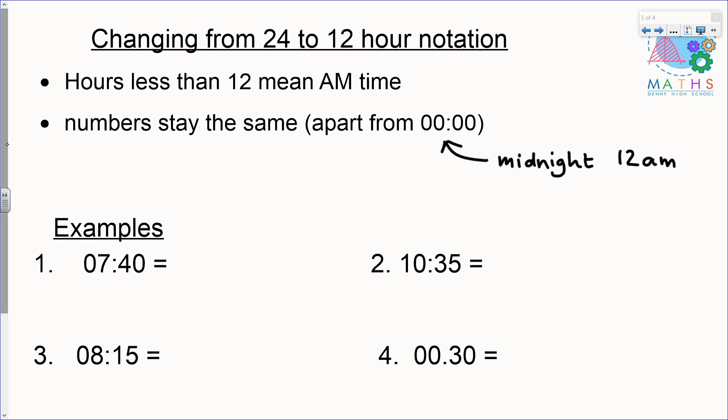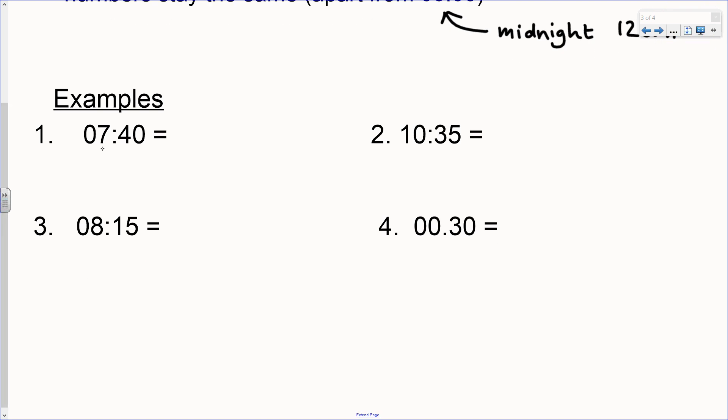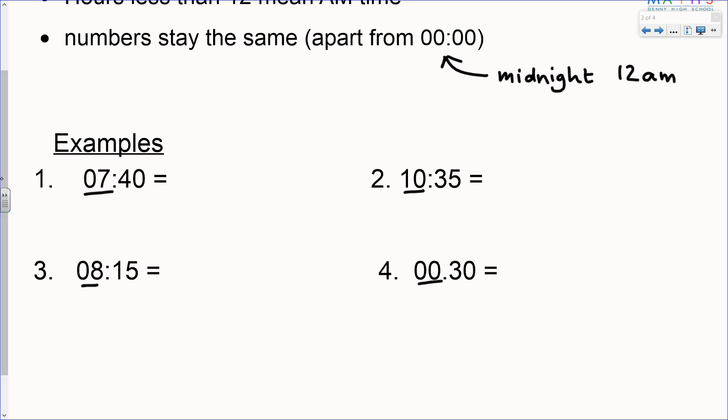Okay let's have a look at some examples. If we look at the hours of these four examples we've got 7, 10, 8 and 00. Because they are all less than 12, they are all am times. So 7 is less than 12, the numbers then stay the same. So we just write 7:40. We don't need four digits so it becomes 7:40 am.